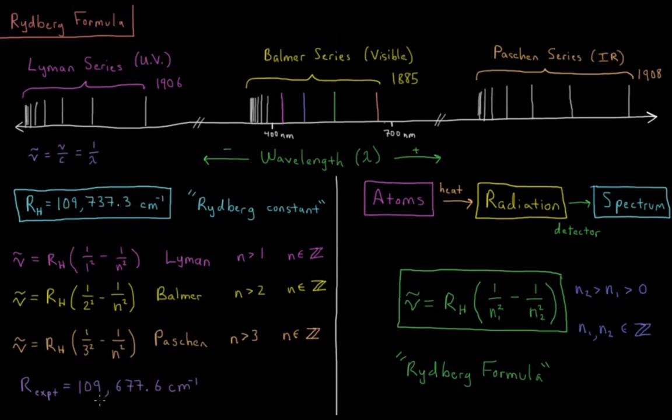This number, 109,677.6, falls in the UV range. This would be the number if you have the constant times 1 over 1 squared, minus 1 over infinity squared.